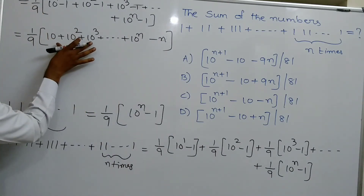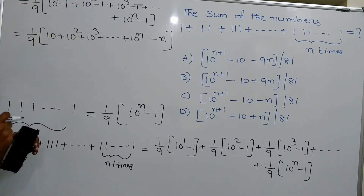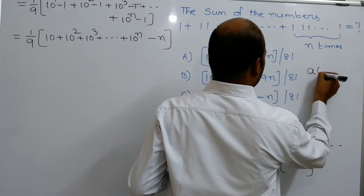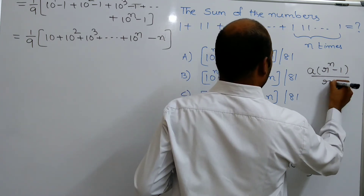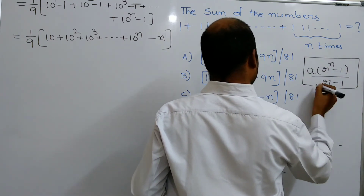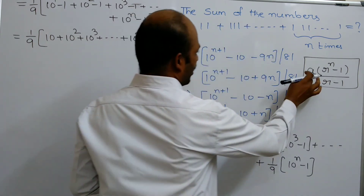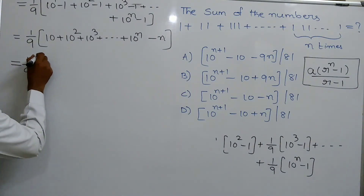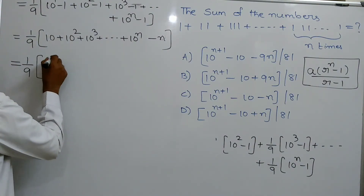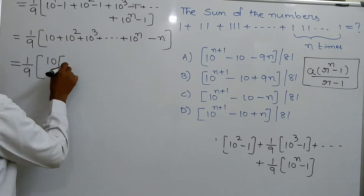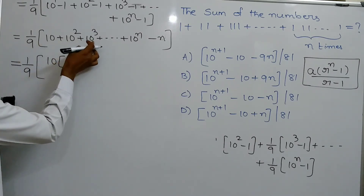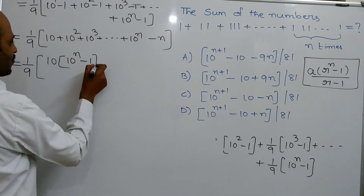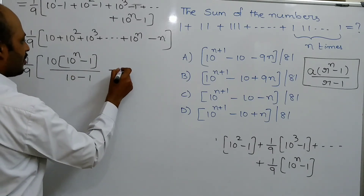It is very clear this is a finite geometric progression. The sum formula is a into (r power n minus 1) divided by (r minus 1). Here a is the first term, r is the common ratio. With a equals 10 and r equals 10, the common ratio t2 divided by t1 or t3 divided by t2 is also 10. So you get 1 by 9 into [10 into (10 power n minus 1) divided by (10 minus 1)] minus n.